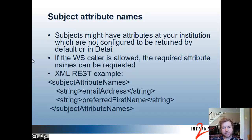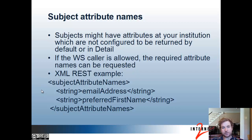Subject attribute names: subjects might have attributes configured in the Subject API and Grouper institution which are not configured to be returned by default or in the subject details. If the web service caller is allowed to access those attributes, they can pass whatever attributes they want in the request and the server will return them. For instance, email address and preferred first name might not be returned by default. In XML REST (though any format works), you pass in subject attribute names as an array of strings with the configured names, and every subject associated with that call will return those attributes.